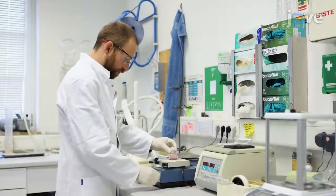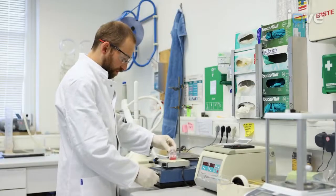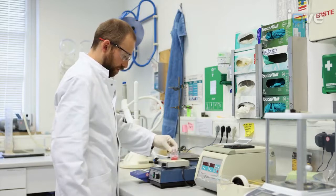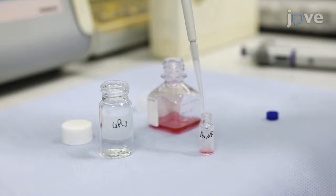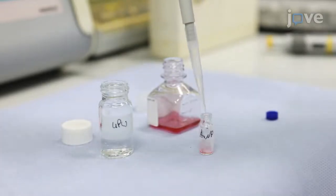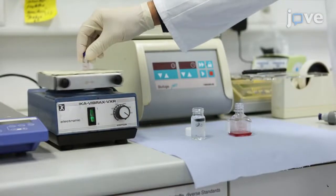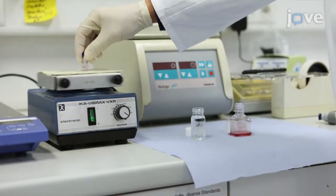Begin by vortexing 50 milligrams per liter of an arbitrary gold nanoparticle size standard for 2 minutes, before diluting the standard to a 1 to 4 ratio with ultrapure water. Then vortex the diluted solution for an additional 2 minutes to obtain a homogenized suspension.